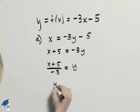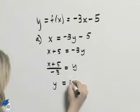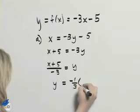We'll switch this around. Now if I divide by negative 3 that's the same as multiplying by negative 1 third.